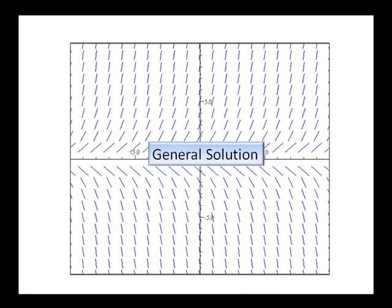And a slope field, again, is a general solution to our differential equation. Now, as mentioned previously, we have specific solutions to our differential equations, and those come when we have an initial condition. So let's see what that would look like graphically.